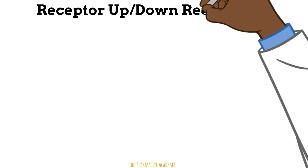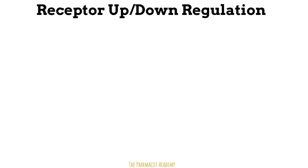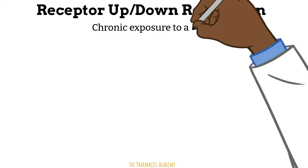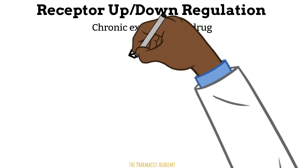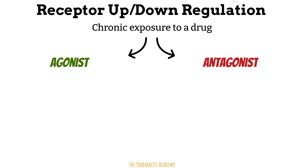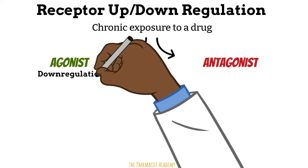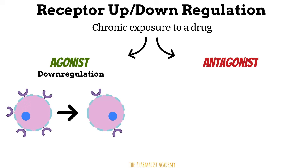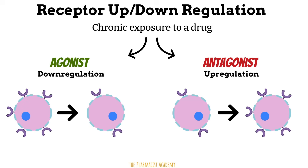Next, we have the concept of receptor up and down regulation. This comes into play with chronic exposure of a receptor to a drug, and it depends on whether the drug is an agonist or an antagonist. Chronic exposure to an agonist causes down regulation — a decrease in the number of receptors — because the receptor is overly stimulated. The opposite is seen with antagonists: chronic exposure leads to upregulation, or an increase in the number of receptors, because if the receptor is being blocked and not stimulated enough, the cell increases the number of receptors on its surface to account for this.